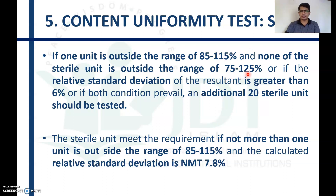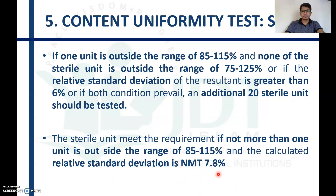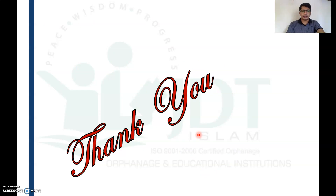If one unit is outside the range of 75 to 125%, the product fails the content uniformity test. That concludes the discussion on evaluation of parenteral products. We have covered sterility testing, pyrogen test, leakage test, clarity test, and content uniformity test.